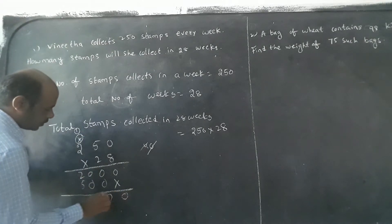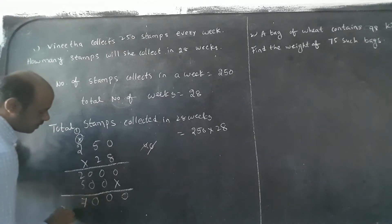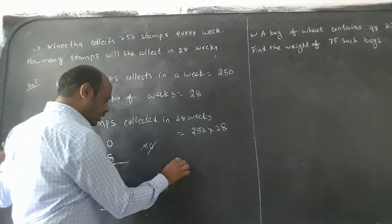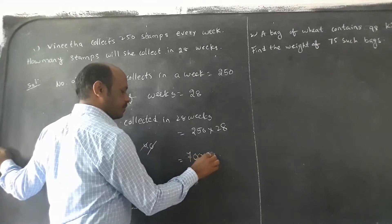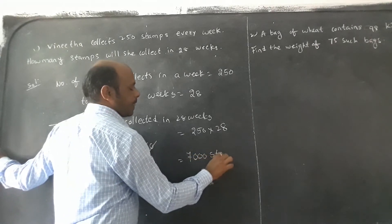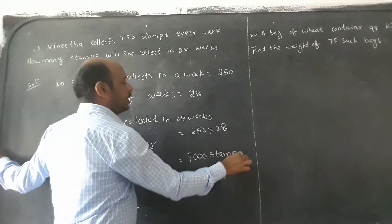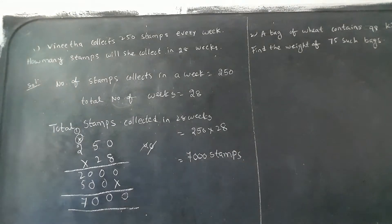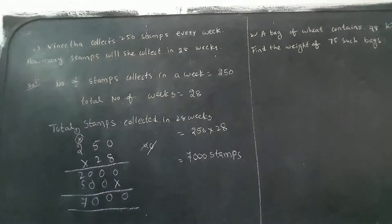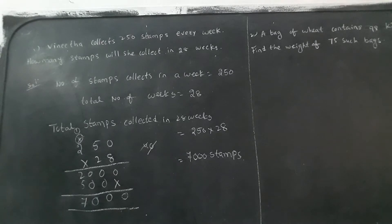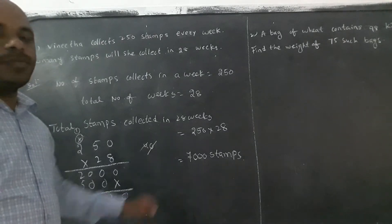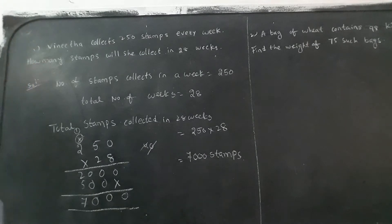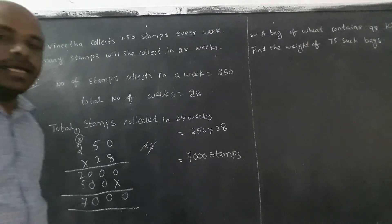See: zero, zero — zero is seven. How much we got total? 7000 stamps she collected. Total how many stamps she collected in 28 weeks — the answer is 7000 stamps she collected in 28 weeks.